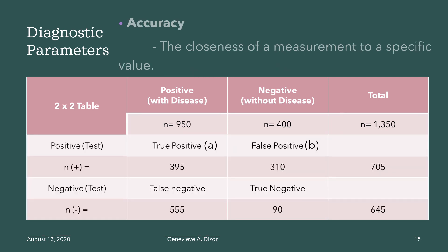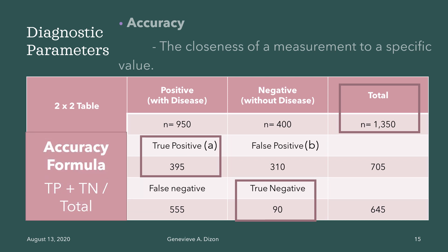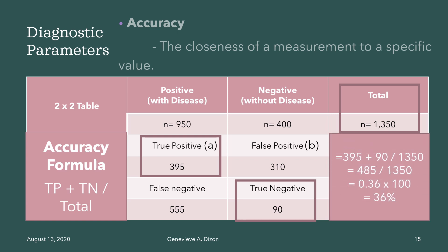The next parameter is accuracy, defined as the closeness of a measurement to a specific value. We need values that gave a correct result — true positives and true negatives — compared to the total population. The formula is true positive plus true negative divided by the total population: 395 plus 90 divided by 1,350. The accuracy for this test is 36%, meaning this test can only give a 36% rate of giving a correct result.